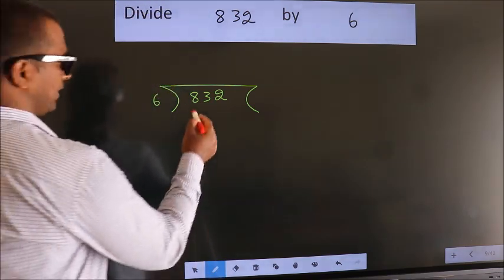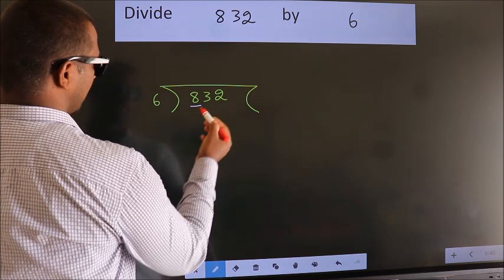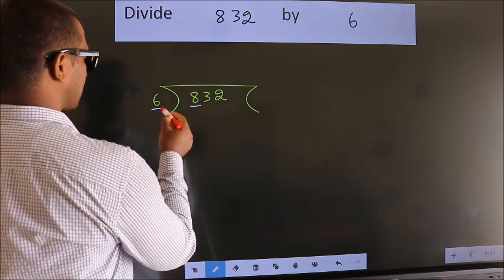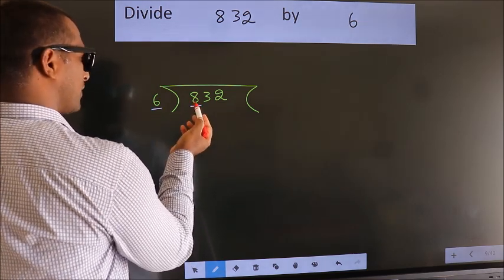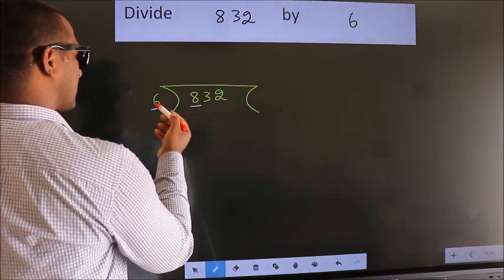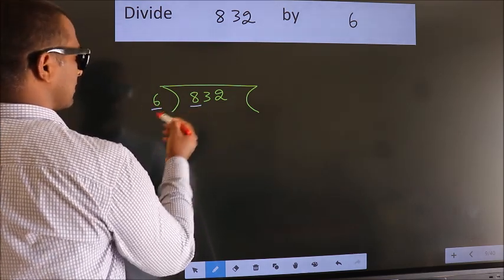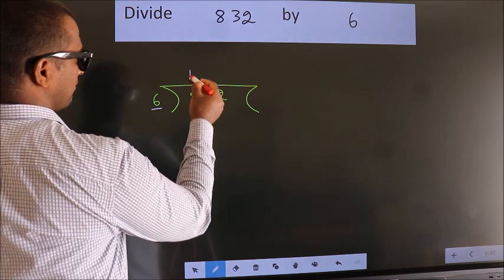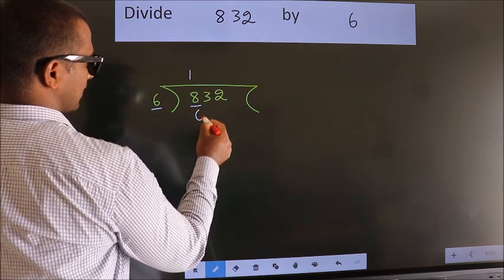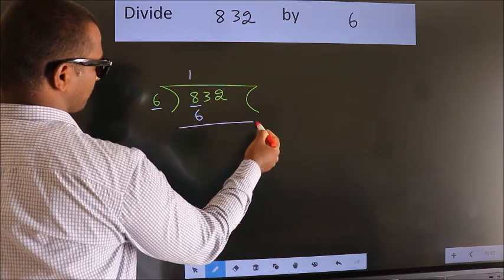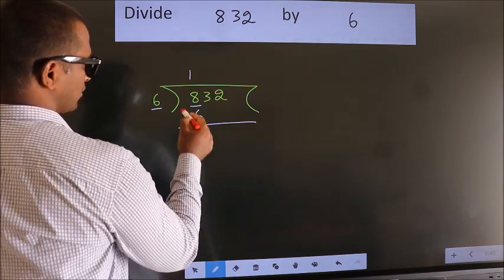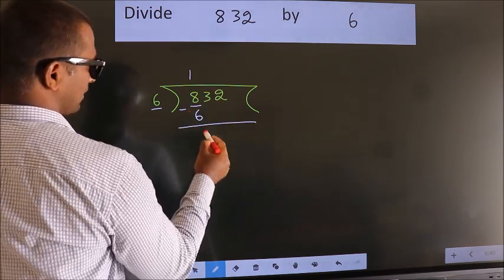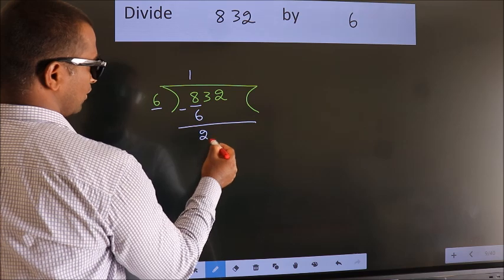Next, here we have 8, here 6. A number close to 8 in the 6 table is 6 ones 6. Now we should subtract. We get 2.